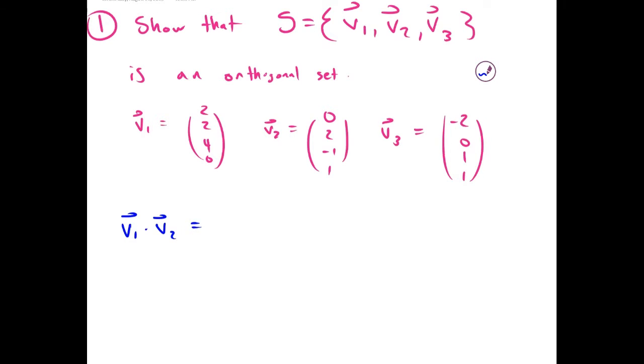So first we'll show V1 and V2 are orthogonal. When we dot these two, we get 0, plus 4, minus 4, plus 0, which is 0. So we know V1 and V2 are orthogonal.